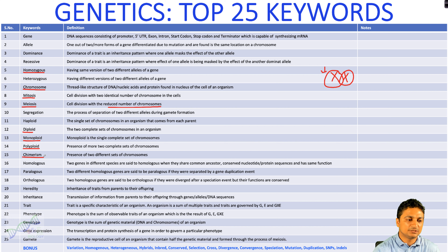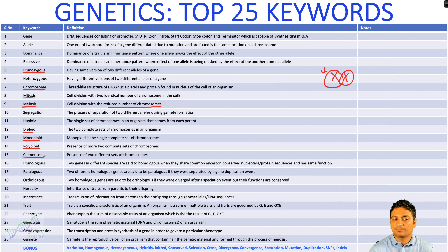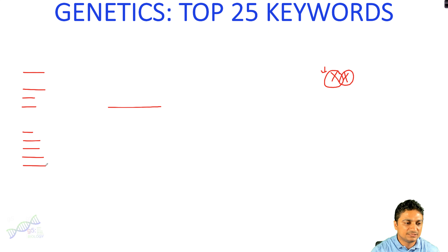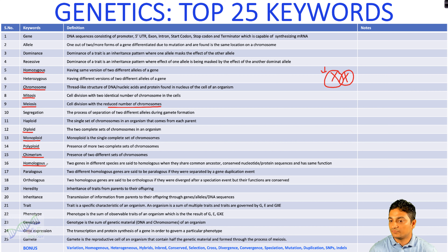The fifteenth keyword is chimerism. Chimerism means an organism has different chromosomes or different genomes in different cells — the whole organism is not the same. One part of the organism has one set of chromosomes and another part has a different set. The sixteenth keyword is homologous — at the level of genes, two genes in different species are homologous when they share a common ancestor, have conserved nucleotide or protein sequences, and the same function.